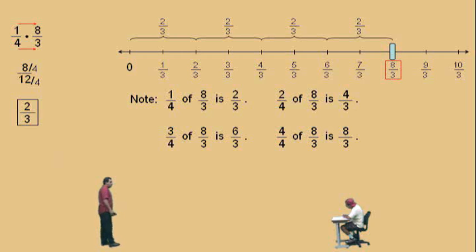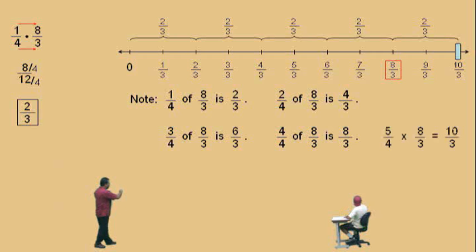All right. Now, here's a question for you, Charlie. If we add another 2 thirds, now, that should actually represent 5 fourths times 8 thirds. See, look at this pattern here. 1 fourth of 8 thirds is 2 thirds. 2 fourths of 8 thirds is 4 thirds. 3 fourths of 8 thirds is 6 thirds. 4 fourths of 8 thirds is 8 thirds. And so, 5 fourths times 8 thirds should be 10 thirds. Okay.